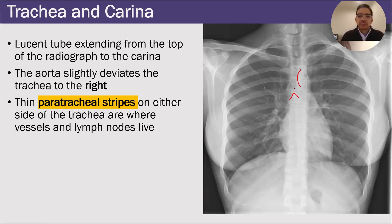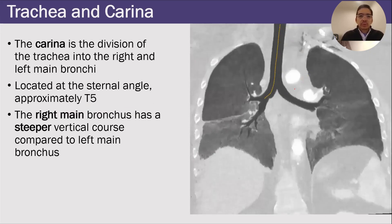On either side of the trachea are what's called the paratracheal stripes. There are vessels and lymph nodes that live in the paratracheal stripes. Here it is on CT. One important thing about the trachea and carina is that the right main bronchus has a more steep and vertical course compared to the left main bronchus.